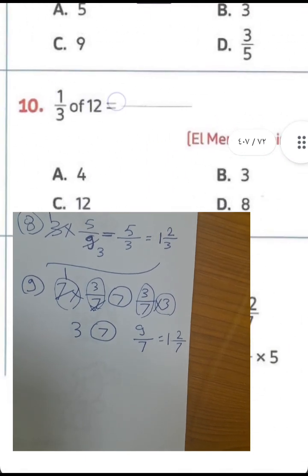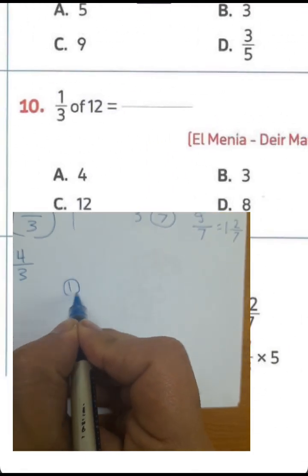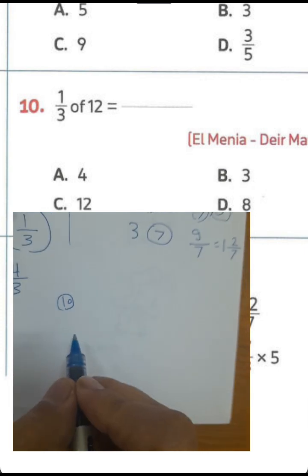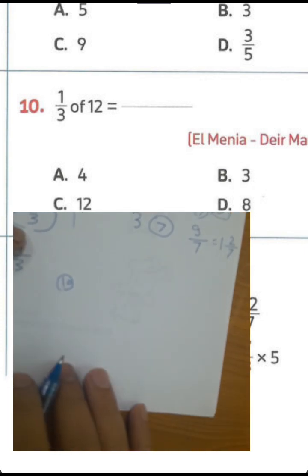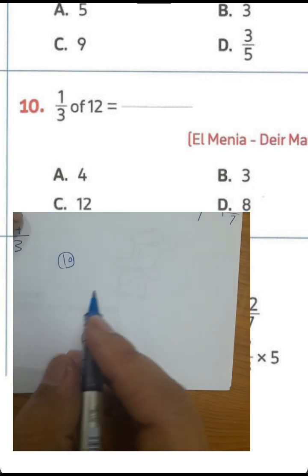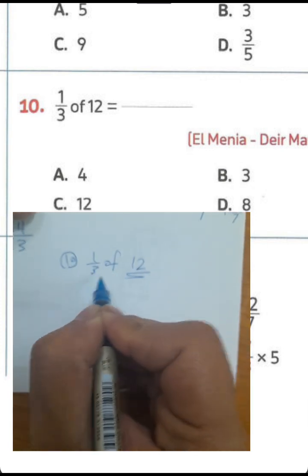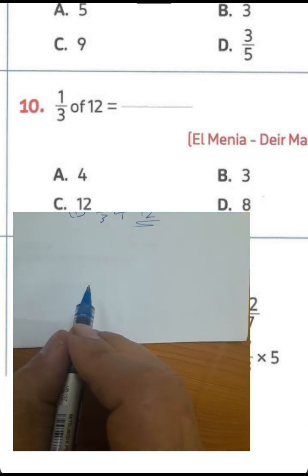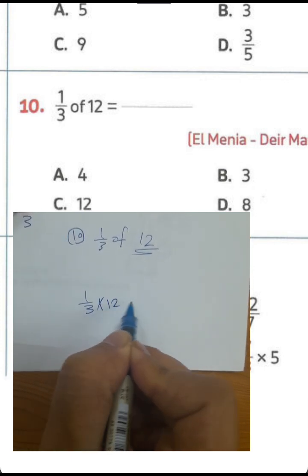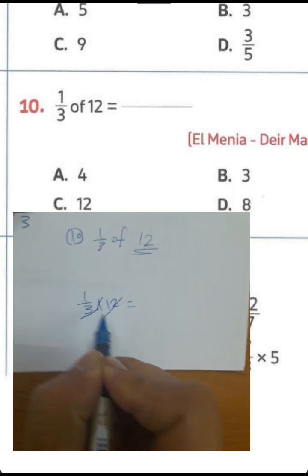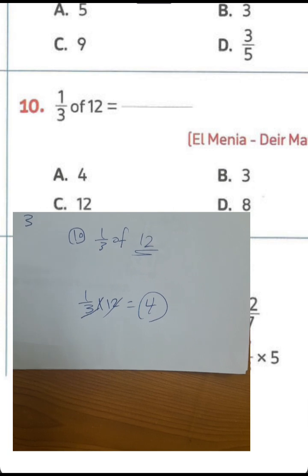Question number 10: a third of 12 — it means the product of one-third and 12. 12 divided by 3 equals 4, so the result here will equal 4.